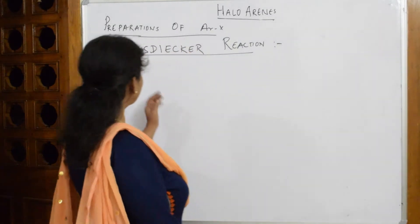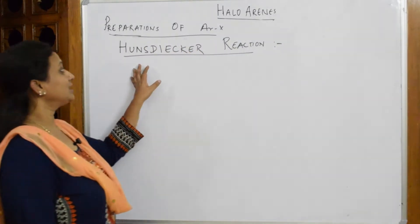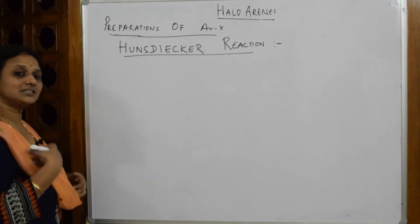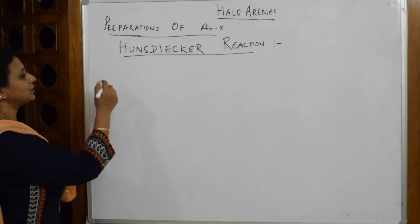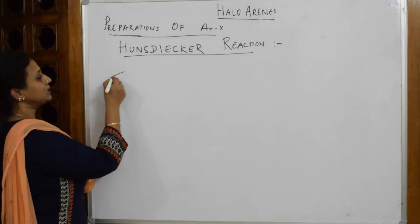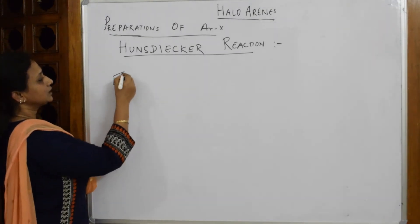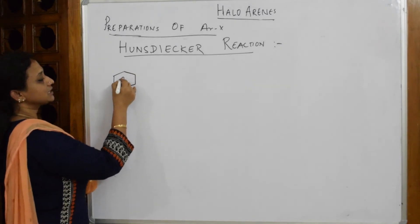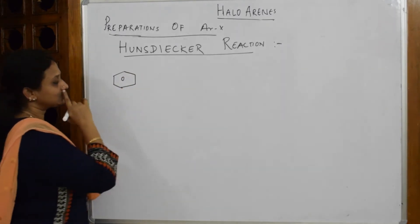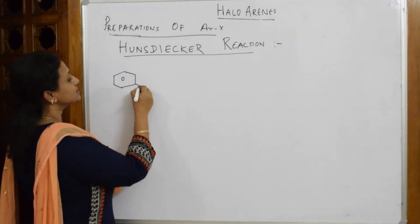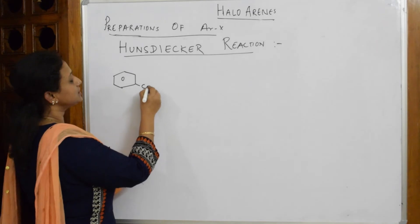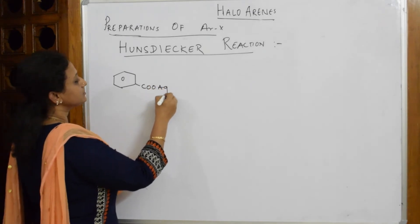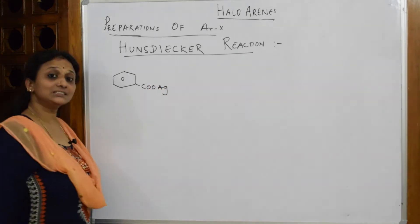Now let us do one more reaction — this is called the Hunsdiecker reaction. In the Hunsdiecker reaction we use the silver salt of benzoic acid (AgOOC-C₆H₅). Let us see what this is.